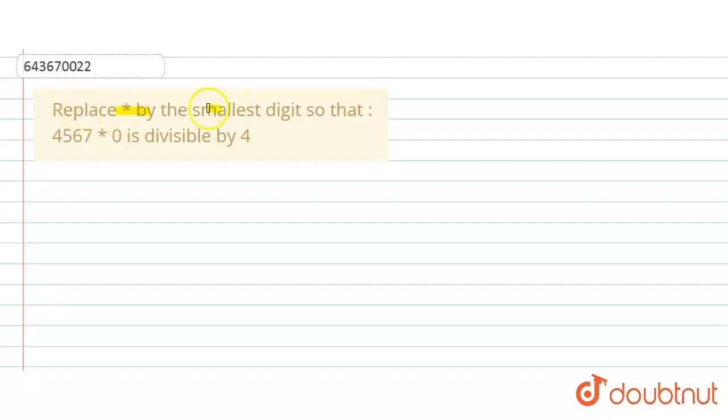Hello everyone, the question says that replace star by the smallest digit so that 4567*0 is divisible by 4.